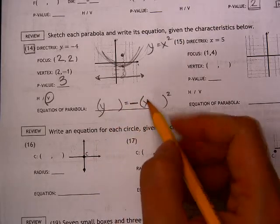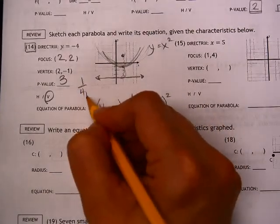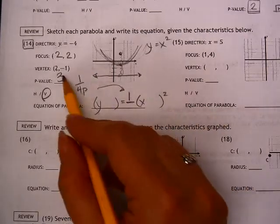So once we have this, we just need two things. We need our p value, which will be 1 over 4p is our a value. So 1 over 12, 4 times p is 12.